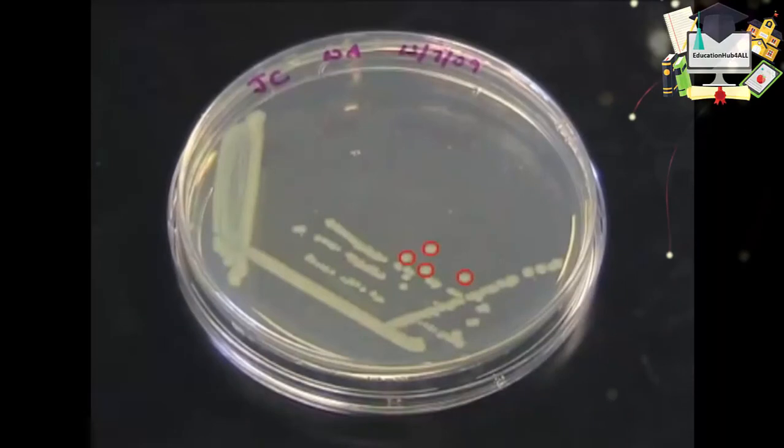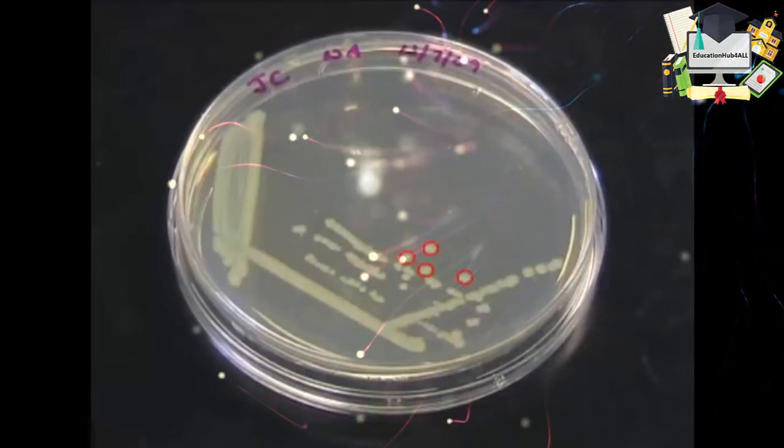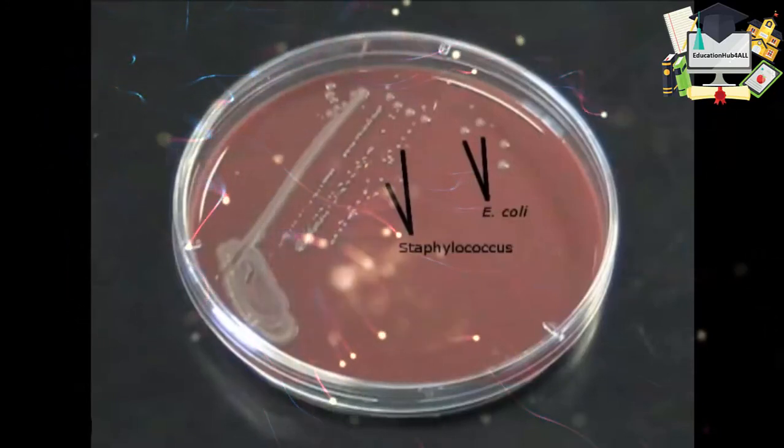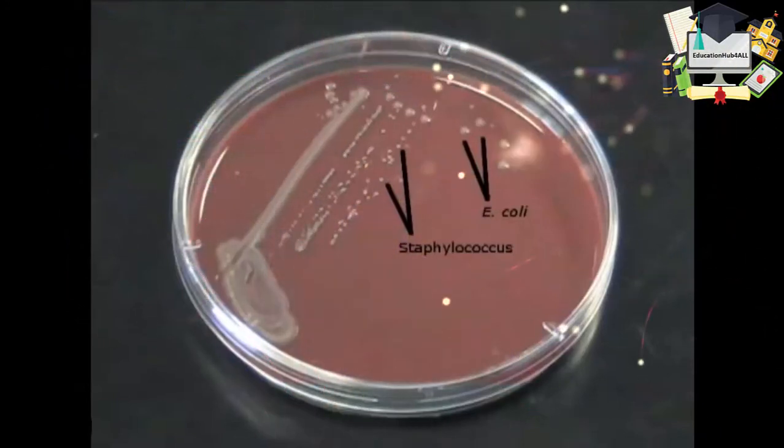Following incubation, you should be able to see single isolated colonies. On this chocolate blood agar plate, you can see different colony morphologies of different bacteria.